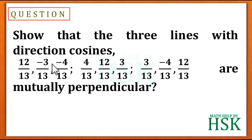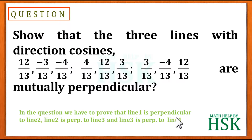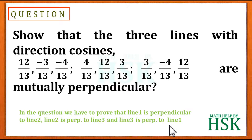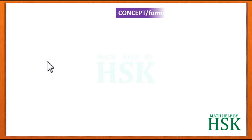We have to prove that line 1 is perpendicular to line 2, line 2 is perpendicular to line 3, and line 3 is perpendicular to line 1, which means that all three lines are mutually perpendicular to each other.